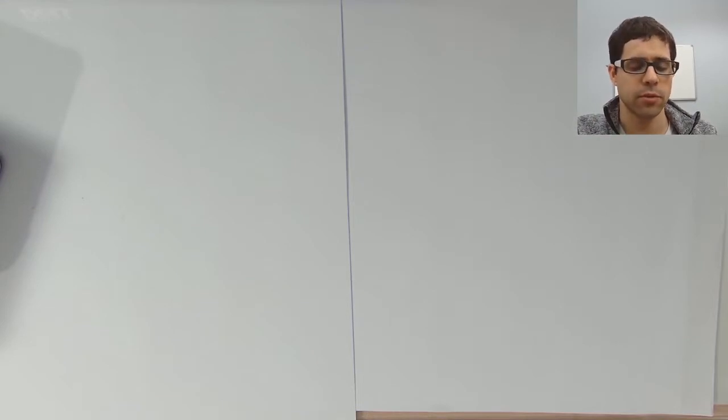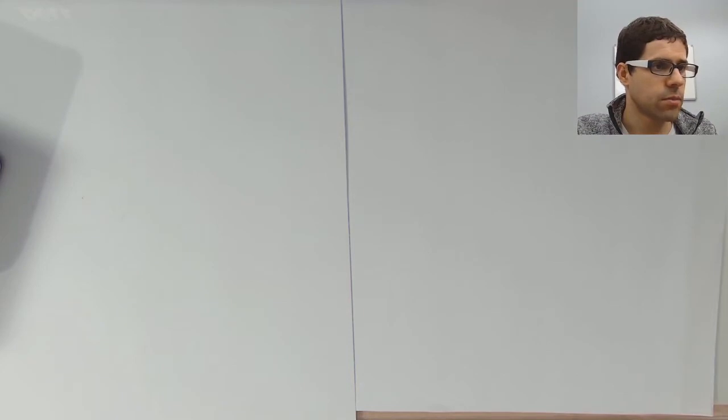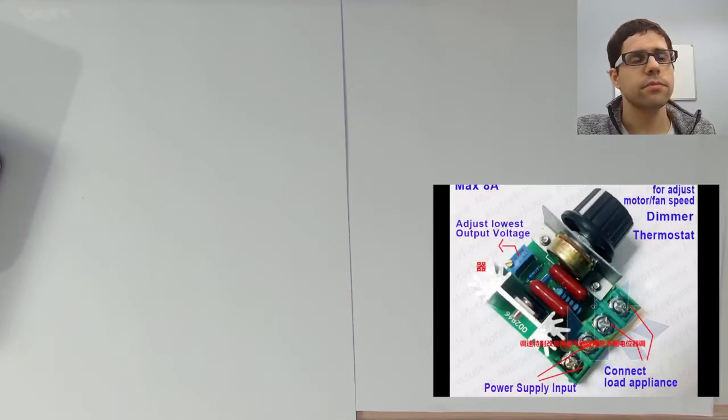This is used, for example, as a light dimmer where you don't want to see the light flickering. This is the device I've got. To make things easier, here's an image. It has one triac, the BTA16800, which is a very basic four quadrant triac, nothing special.